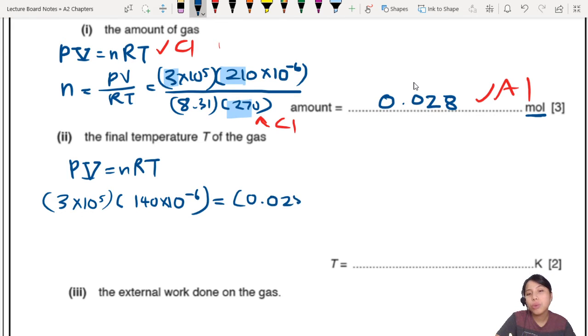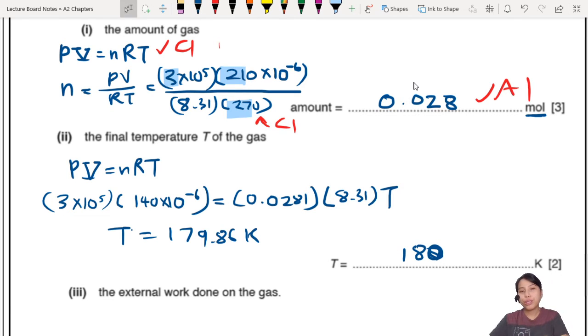No change. But volume now is different. Volume has become smaller. So 140 times 10 to the negative 6. Moles? We should use 0.0281. Ratio would be a bit more accurate, because ratio, you assume the moles are the same. And then R, 8.31 times T. So the T here, you'll get about 179.86 Kelvin. Maybe a little bit different if you use different values, but generally 180. Now, let me show you the shortcut and how much shorter it is. But first, let me show you the marks. Two marks, final answer, and I guess, correct equation.